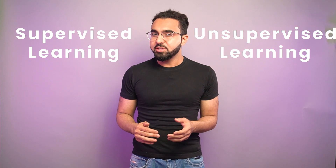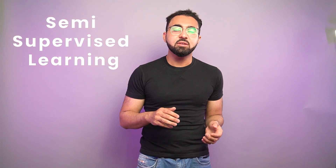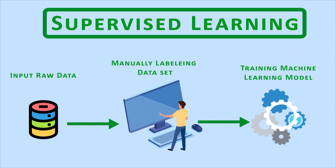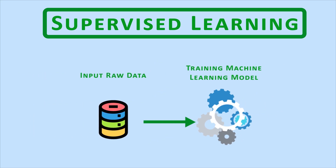We have already discussed the core branches of machine learning, which are supervised learning, unsupervised learning, and reinforcement learning. Now let's talk about hybrid branches, which use a mix of techniques from the core branches. The two most useful hybrid fields are semi-supervised learning and self-supervised learning. Both of these hybrid fields fall in a category of machine learning called weak supervision.